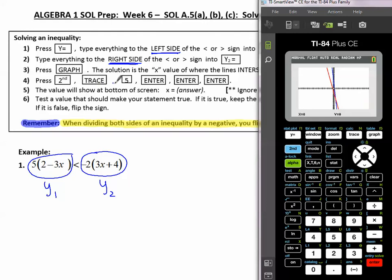Now I'll be able to see that they intersect. So we press second trace 5, enter, enter, enter. Second trace 5 for intersect, enter, enter, enter, to see where that intersection point is. We only need the x value for our answer. The value will show at the bottom of the screen. We only want the x value. We ignore the y value.